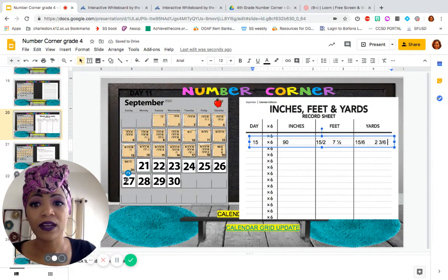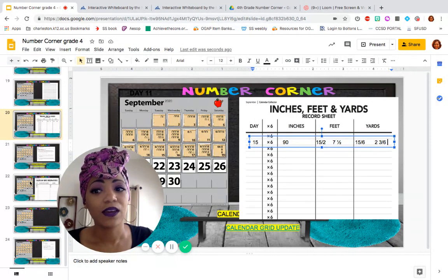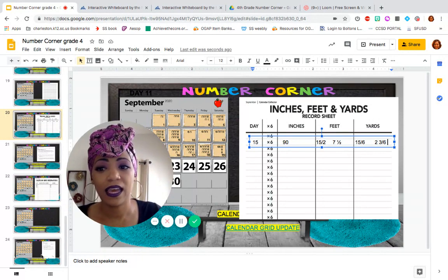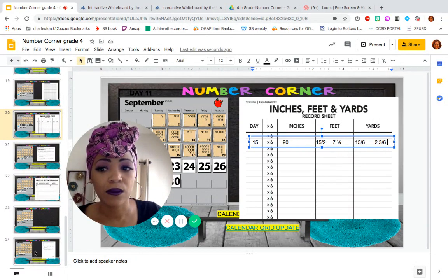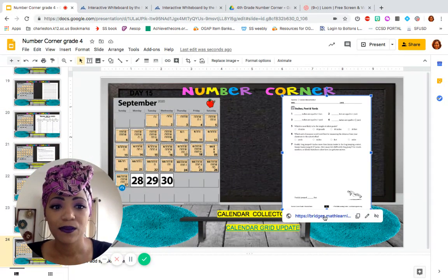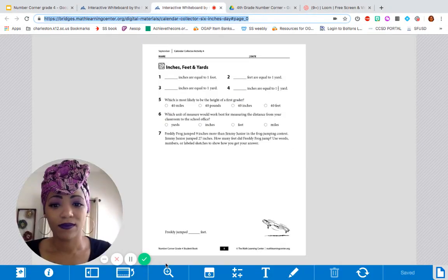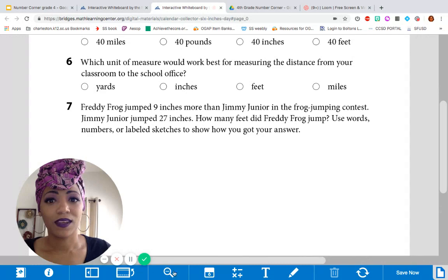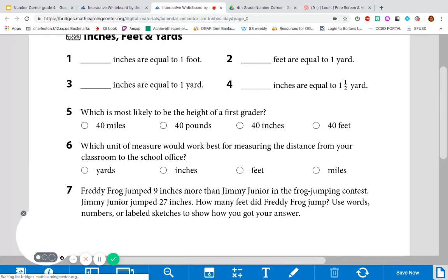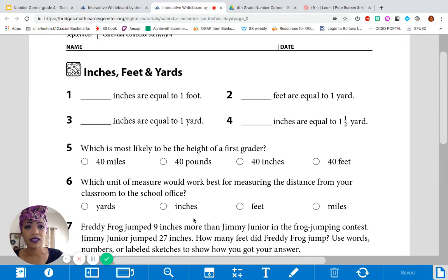Okay. Well, today, we're going to be doing a workbook page revolving around our calendar collector and what we've learned so far. What we already know about inches, feet, and yards. So, get out your number corner journal and open it up to page 5. We're going to work through this together. All right. Here it is. Are you there? I'm going to make myself a little smaller. So, you can really see the problems here.